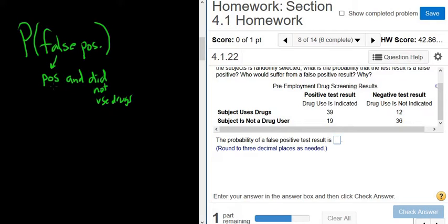So in a drug test, it means that you test positive for drugs and you did not use drugs. If you took a pregnancy test, it would mean that you're pregnant, but you're not really pregnant. So the test says you're positive, but you're not really pregnant.